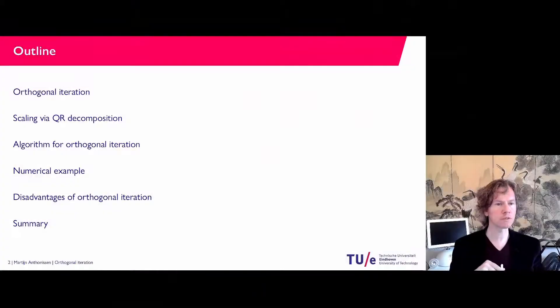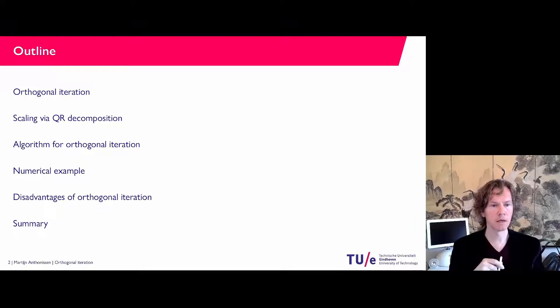So let's see what we have. I'm going to talk a little bit about orthogonal iteration, what it is. I will use the QR decomposition in this algorithm and I will give a short numerical example. Then at the very end I will also sketch some of the disadvantages of orthogonal iteration, which is why it is not used as a common numerical method. But in fact the QR algorithm solves these problems and that is what will actually be used as a numerical method to find eigenvalues.